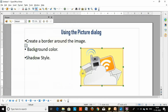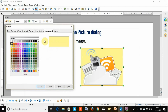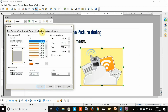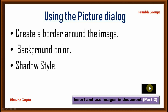Background color is applied. Next is shadow style. Click the Format menu, then Picture, then click the Border option and select a position for the shadow style. If you want to change the distance, you can. If you want to change the color, you can — change the color then click OK. It's applied.